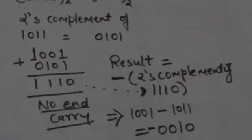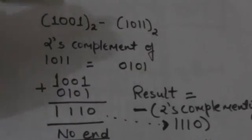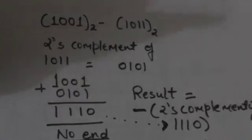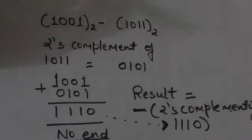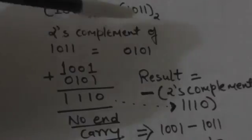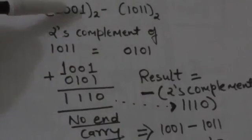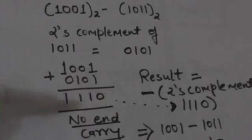Now suppose we have to subtract 1011 from 1001 — both binary numbers. First we will find the 2's complement of 1011, which is 0101. Now add this 2's complement to the first number 1001. When we add 0101 to 1001 we get 1110. Here the sum produces no end carry.